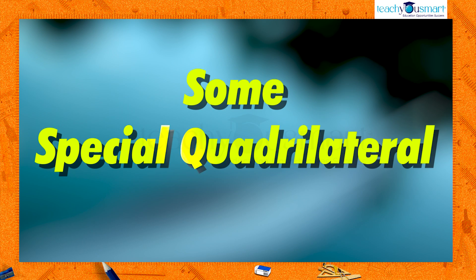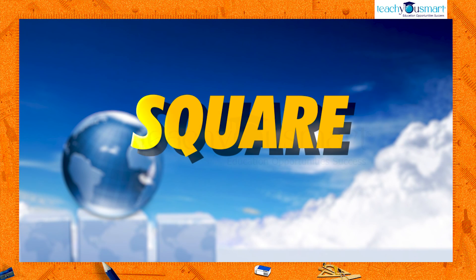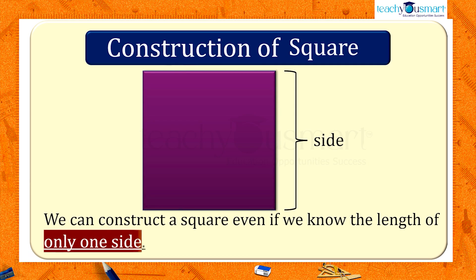Today, we are going to construct a special type of quadrilateral that can be drawn with less than five measurements. Square is such a special case. We can construct a square even if we know the length of only one side.